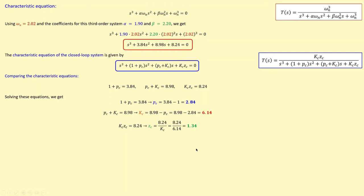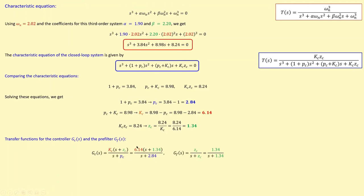With KC = 6.14, ZC = 1.34, and PC = 2.84, we can write out the transfer function for the controller and for the pre-filter. The total closed-loop transfer function is then obtained by substituting all values into the complete expression.